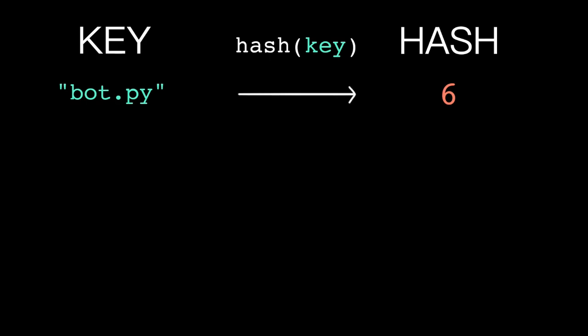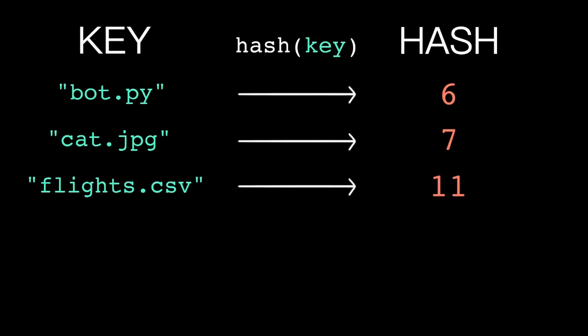The important property is that for any given key, the function returns the same integer every time. This is why dictionary keys need to be immutable, to guarantee that the key's hash is always the same.